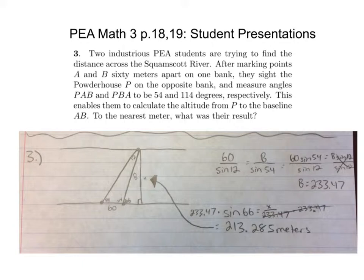It was 60 meters apart, so you can use the law of sines. Also, because 54 and 114, this is a triangle, the remainder would be 12 if you added those together and subtracted from 180. Then law of sines: 60 over sine 12, and you're trying to find the altitude, but first you have to find this side B, equals B over sine 54.